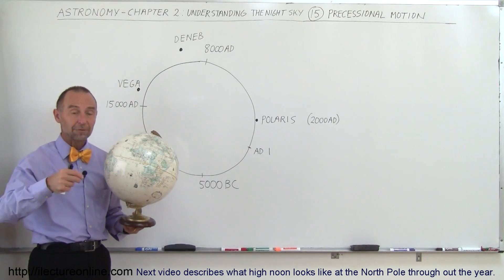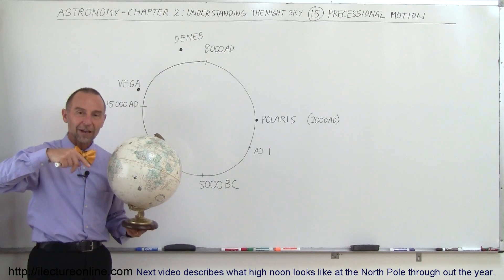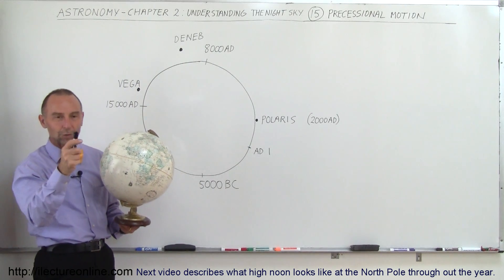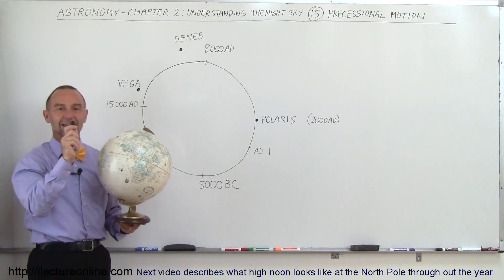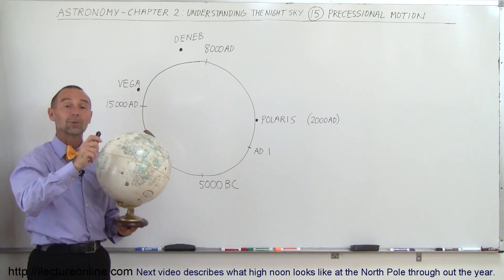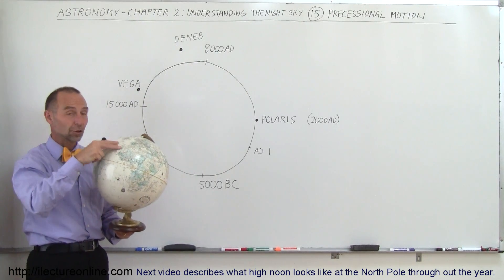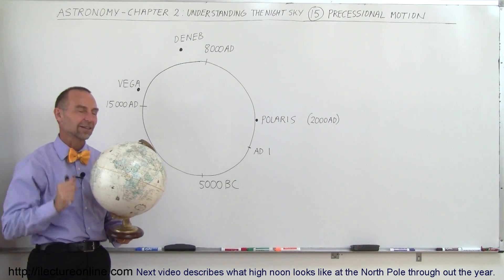Most of us that played as a kid with a top before, whenever you make something spin really fast, it tends to rotate like that. As it's spinning really fast, it tends to slowly rotate like that, which is a precessional motion, and the Earth is just like a spinning top. It does exactly the same thing.